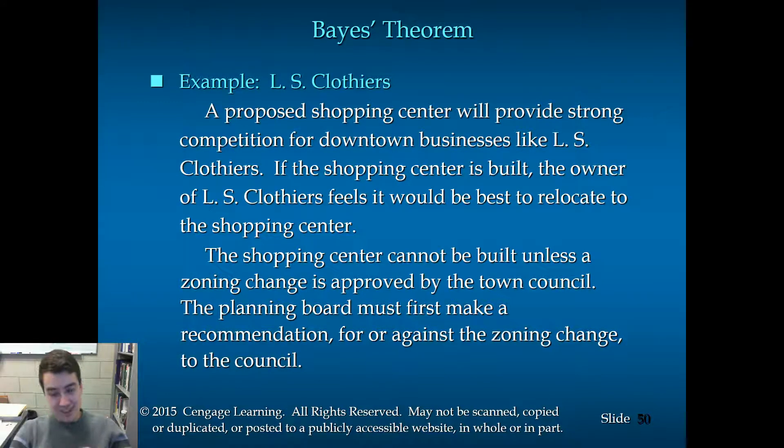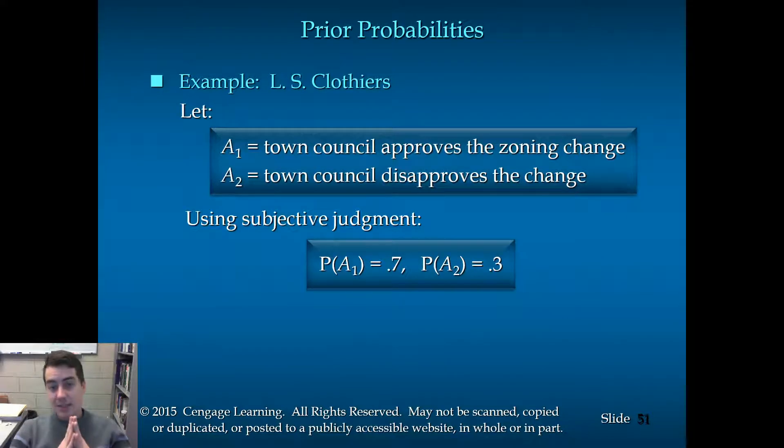So the planning board will make a recommendation for or against the zoning change, and then the council makes a decision. So there's this important two-step process here. Planning board's recommendation and then council's decision. So that gives us an opportunity to apply Bayes' Theorem in the interim. So let's say that we know from either some combination of data, circumstantial evidence, subjective judgment, we end up with a 70% chance that the town council approves the zoning change, and we call that event A1. And there's a 30% chance that the town council will disapprove the change with an event A2.